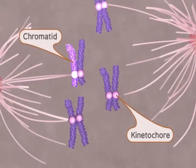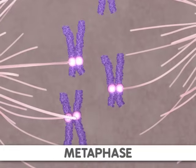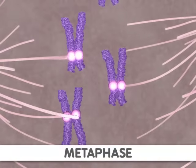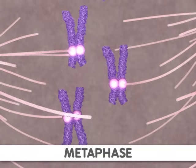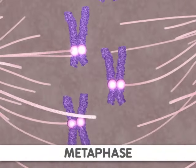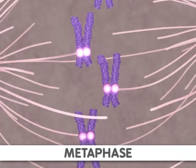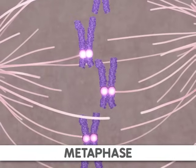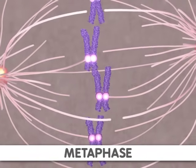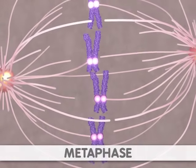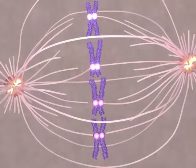Next comes metaphase. During this stage, the sister chromatids align along the center of the cell so that both chromatids face toward opposite poles of the cell. Now the sister chromatids are ready to be separated.